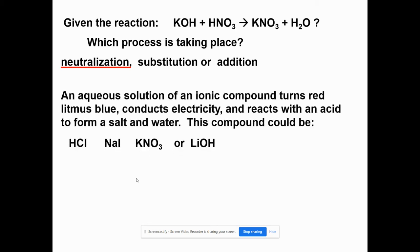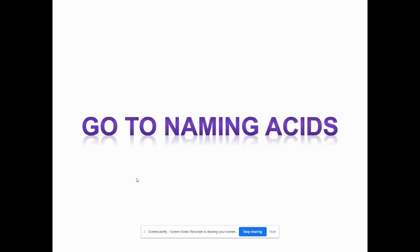An aqueous solution of an ionic compound turns red litmus paper blue, conducts electricity, and reacts with an acid to form a salt and water. Remember, base blue, blue blue base. Which one would it be? Bases end in OH. Makes it a little bit easier. There you have it. So my next video is going to be about naming acids. Acids are really easy. So hope that was helpful and I'll see you soon.